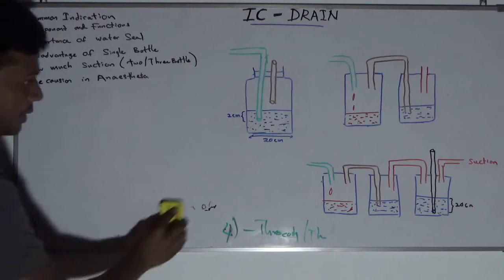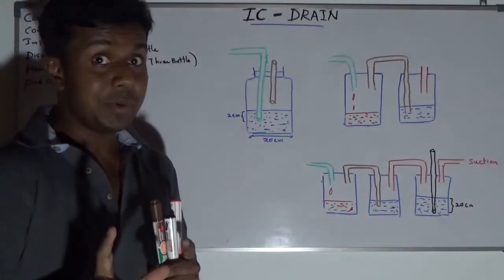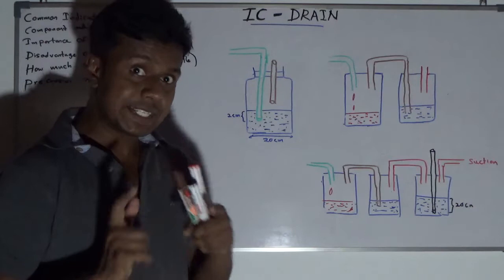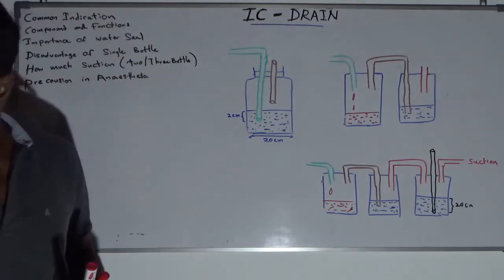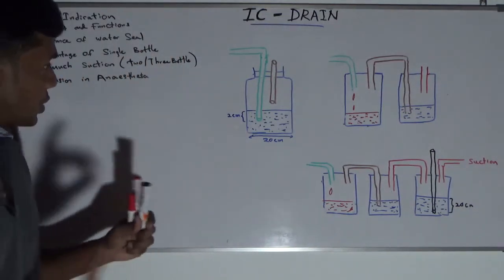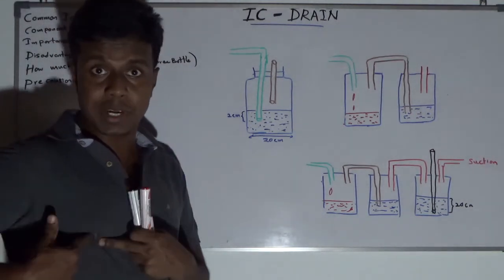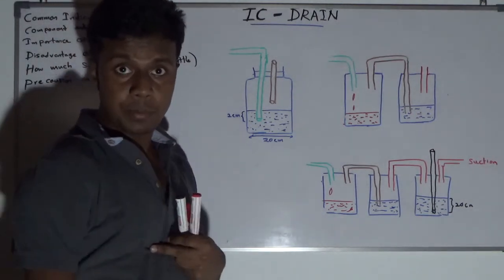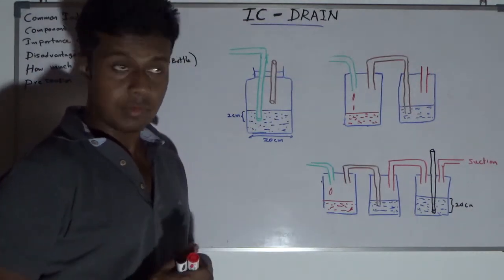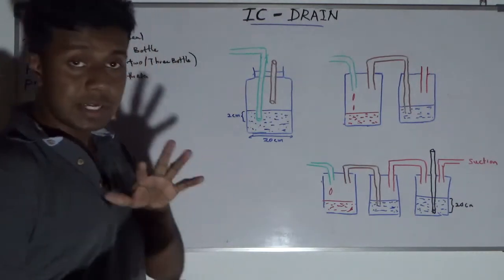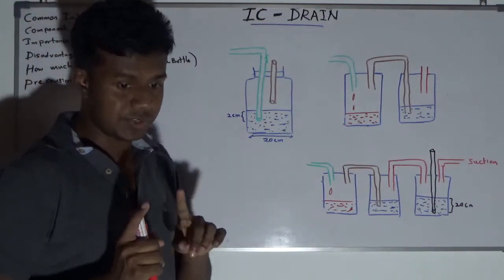We will see what are the parts of the IC tube — not just the IC tube, but the intercostal drain system. The proper name should be intercostal drain system. The intercostal drain system consists of tubing from the patient end to the bottle, and a bottle containing water. I will explain the single bottle IC drain system first.